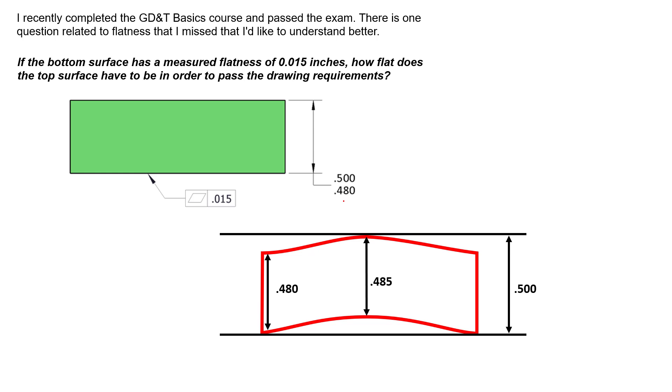So if we imagine an envelope of perfect form whose size is at 0.500, we see that we also have to be inside this envelope entirely as a feature. Next we see that we also have the flatness tolerance. That flatness tolerance was 15 thousandths, and as the question stated, we used up all of that 15 thousandths.